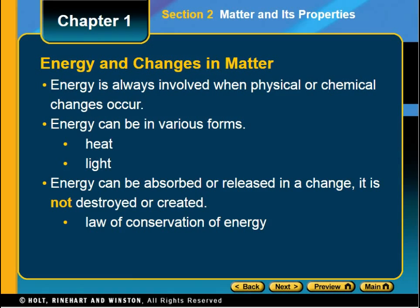Energy is always involved when a physical or chemical change occurs. When melting ice, you need to put heat into it. A chemical change always uses energy or gives off energy — you can see energy as heat or light. Energy cannot be destroyed or created; that is the law of conservation of energy. Think of it as one big cosmic recycling project — the energy used in a reaction goes into something else and that product may release energy for another job. The energy doesn't disappear, it just changes where it's being stored; it is absorbed or released.